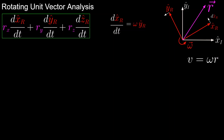However, we want this equation to be more general, so it can apply no matter which direction the angular velocity is pointed in. So instead, we generalize by saying that the derivative of x-hat_r with respect to time is equal to omega cross x-hat_r. You can verify that this is true by using the right-hand rule.